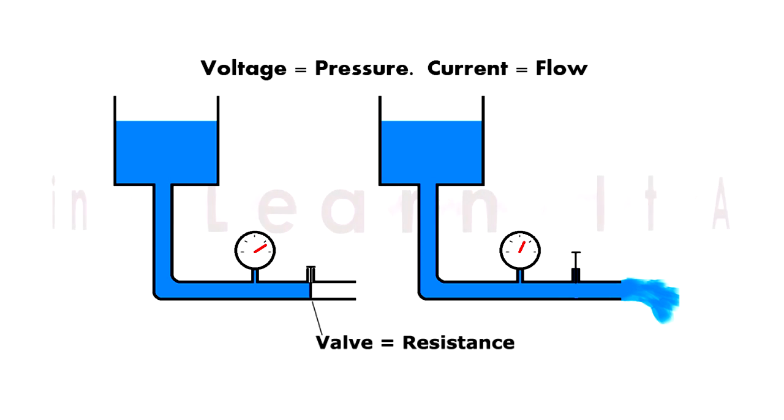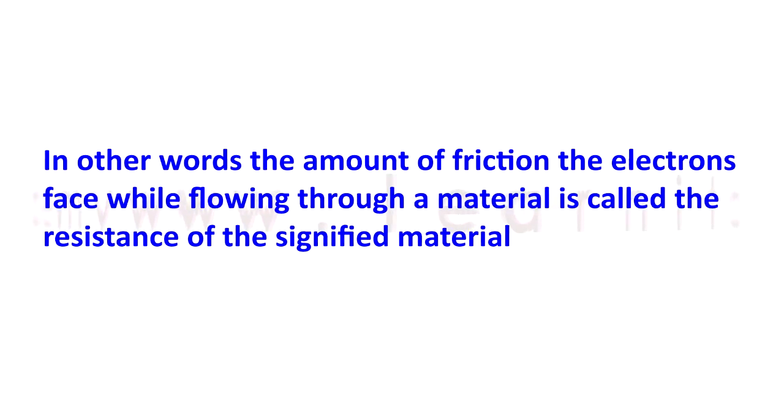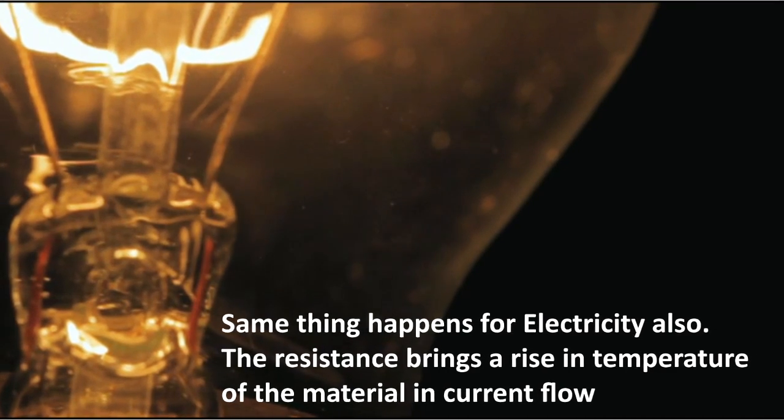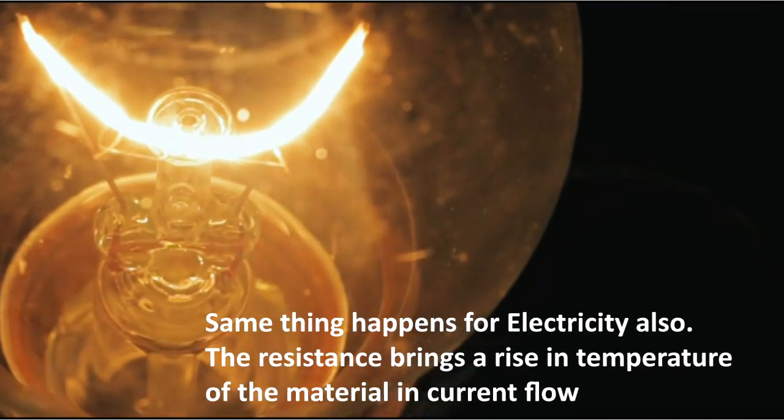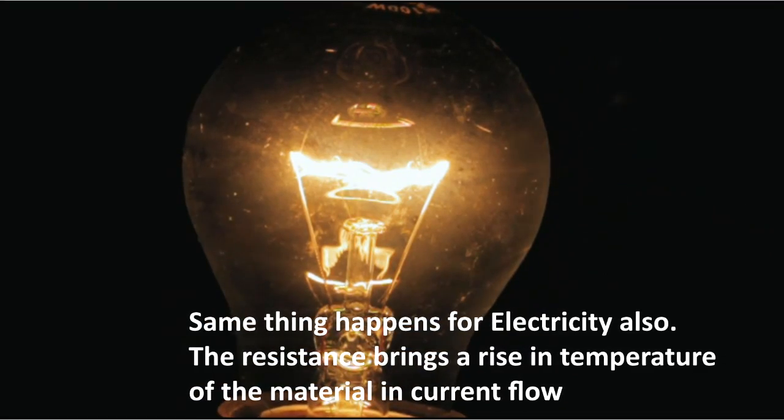In other words, the amount of friction the electrons face while flowing through a material is called the resistance of that material. What happens if anyone pulls a heavy block of metal through the ground? It heats up due to the friction of the earth with its base. Same thing happens for electricity also. The resistance brings a rise in temperature of the material during current flow.